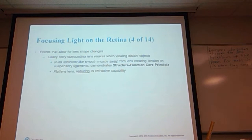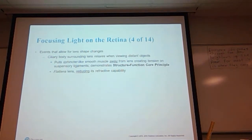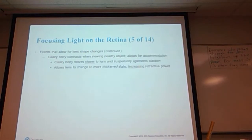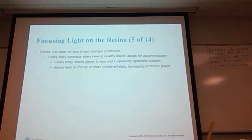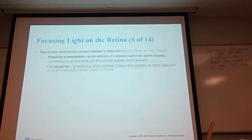The ciliary body surrounds the lens and relaxes when viewing distant objects, pulling the sphincter-like muscles away from the lens and creating tension on the suspensory ligament. This flattens the lens and reduces its refractive capability. The ciliary body then contracts when viewing nearby objects, which allows for accommodation. The ciliary body moves closer to the lens and the suspensory ligament slackens, which allows the lens to change to a more thickened shape, giving increased refractive power.